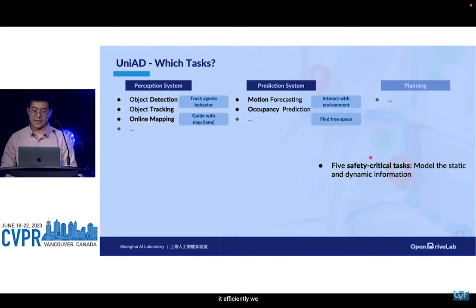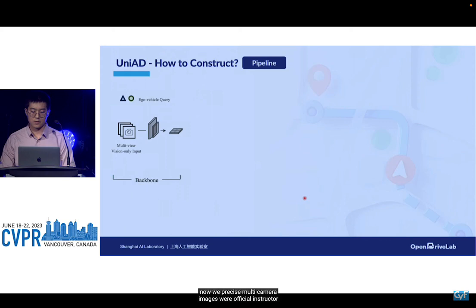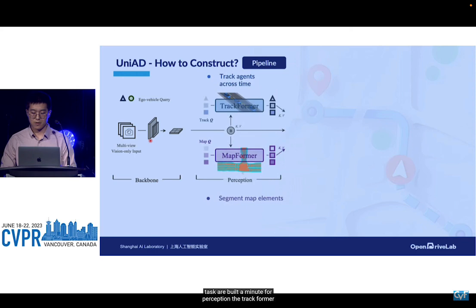We select five safety-critical tasks in perception and prediction to model the static and dynamic information. We also organize these tasks in a hierarchy to maximize information flow to the planner. We process multi-camera images with our feature extractor, transforming them into bird's-eye view images on which each task is built. For perception, the TrackFormer tracks all dynamic agents across time, and MapFormer segments the map elements for geometric guidance.